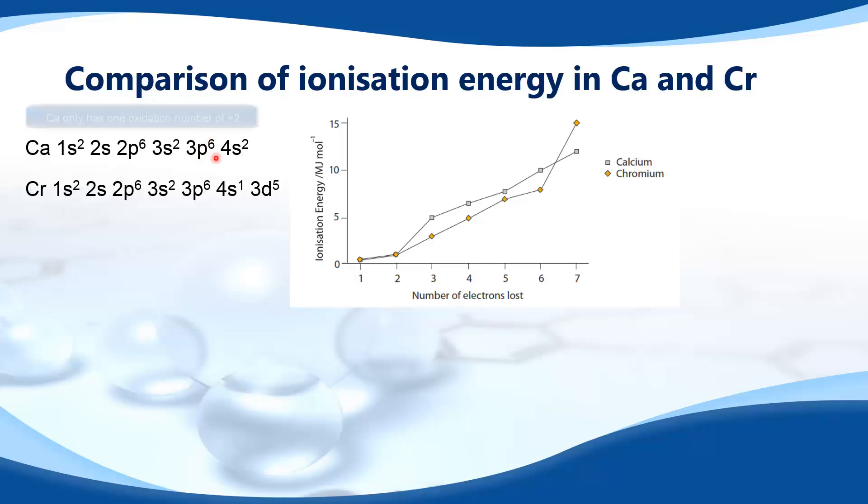If we look at the successive ionization energies for chromium, we don't see the big jump until the seventh electron is being removed. The reason for this big jump is that the seventh electron is being removed from the 3p sublevel. The first six electrons that are removed are being taken from the 4s and 3d sublevels. Because the 4s and 3d sublevels are quite close in energy, there's no big jump until we remove the electron from the 3p sublevel.